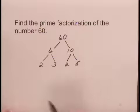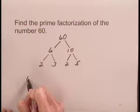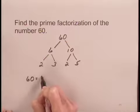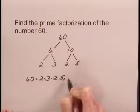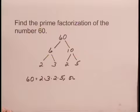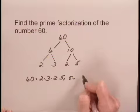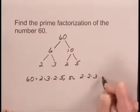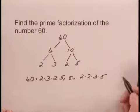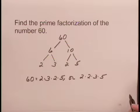So we have the prime factorization of 60, and we can write it as 60 equals 2 times 3 times 2 times 5. Or if we wanted to write all of the same numbers together, we could write this as 2 times 2 times 3 times 5. This is the prime factorization of the number 60.